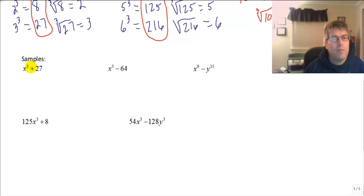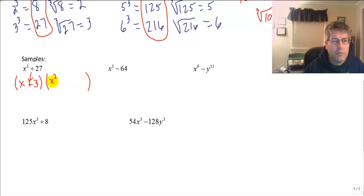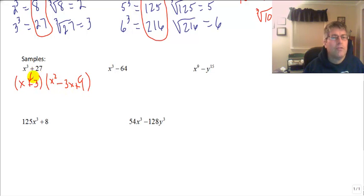Sample problem: x cubed plus 27. Both are perfect cubes, so it factors into a binomial times a trinomial. The cube root of x cubed is x, and the cube root of 27 is 3 — that goes in our binomial as x plus 3. Then we square x to get x squared, square 3 to get 9, and multiply x times 3 to get 3x in the middle. The result is (x + 3)(x² − 3x + 9).